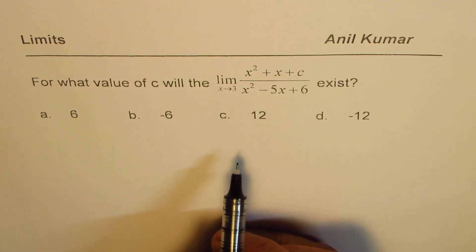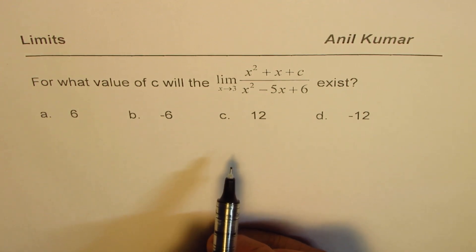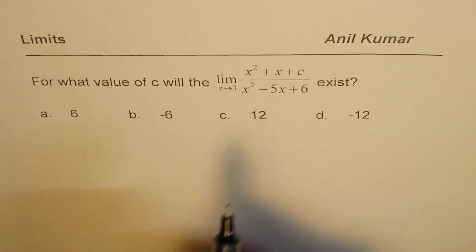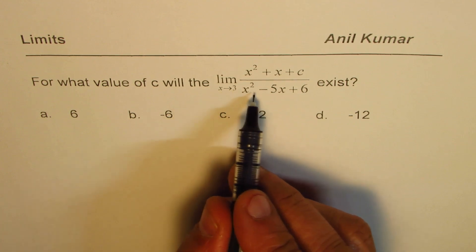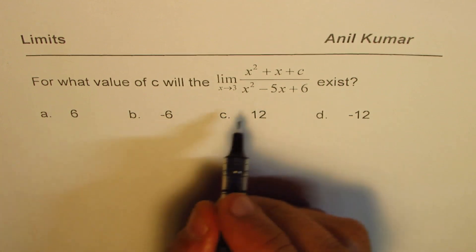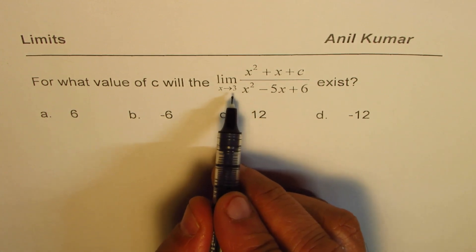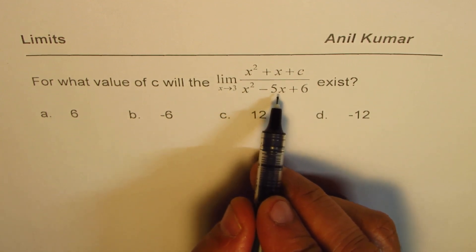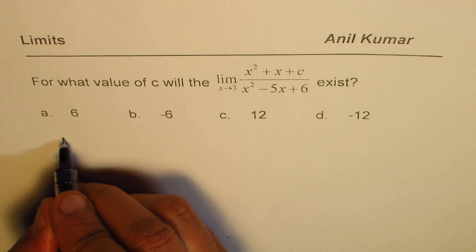You can pause the video, answer the question and then look into my suggestions. Now, in such questions, the strategy is substitute 3 into the denominator. What we see here is the denominator becomes 0 when you substitute 3. The reason is that x minus 3 is a factor.